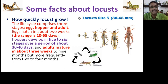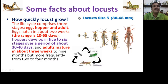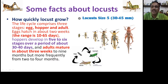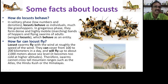How quickly do locusts grow? They can reach up to 70 millimeters in length. The life cycle comprises three stages: egg, nymph (hopper), and adult. Egg hatching takes around two weeks, ranging from 10 to 65 days. Hoppers develop through five to six stages over about 30 to 40 days. Adults mature in two weeks to nine months, but more frequently in two to four months.